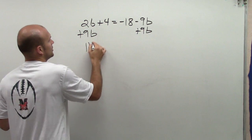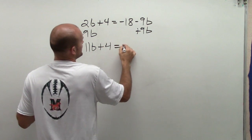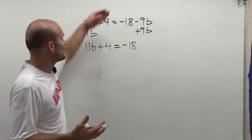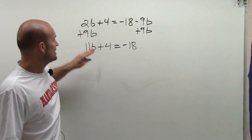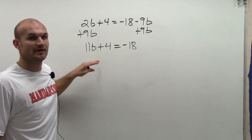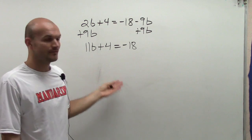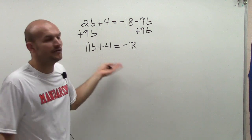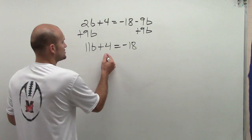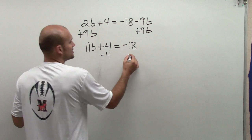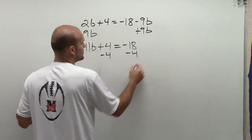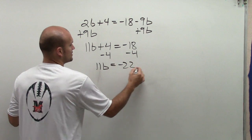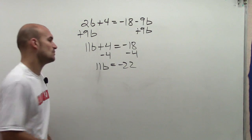Therefore, it gives me 11b plus 4 equals negative 18. So just by doing that one simple step, I was able to take my b's, combine them to one variable, and now I can solve this using my two-step equations. The first thing I do is undo addition by using the subtraction property of equality, giving me 11b equals negative 22.